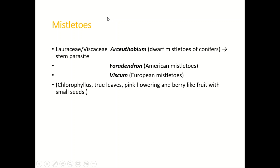Next are the mistletoes, which belong to the Lauraceae or Viscaceae families. These are stem parasites and partial stem parasites. There are different species and different genera — for example, Arceuthobium, which are dwarf mistletoes of conifers; Phoradendron, the American mistletoes; and European mistletoes. As mentioned, these have chlorophyll with green leaves.